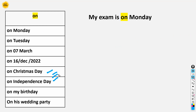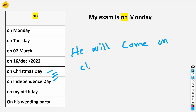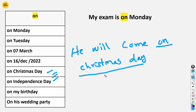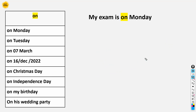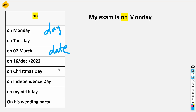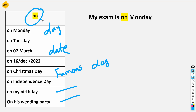We also use 'on' with specific or famous days: Christmas Day, Independence Day, Mother's Day, Father's Day. For example: 'He will come on Christmas Day', 'He will come on Independence Day', 'He will come on Mother's Day', 'He will come on Father's Day.' For birthdays: 'Please come on my birthday.' And for parties or events: 'on his wedding party.' So with days, dates, famous days, birthdays, and parties, we use 'on'.